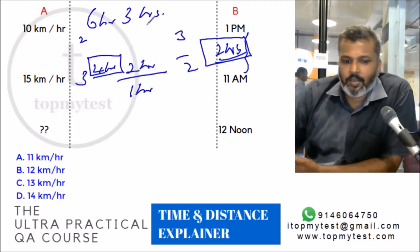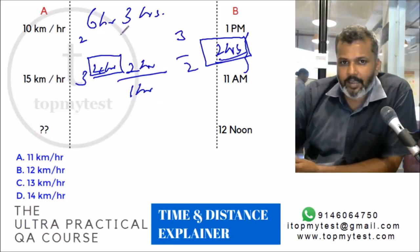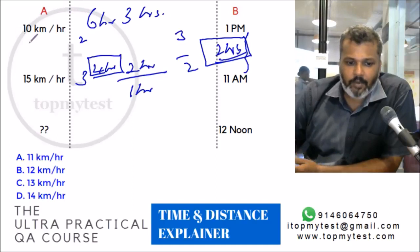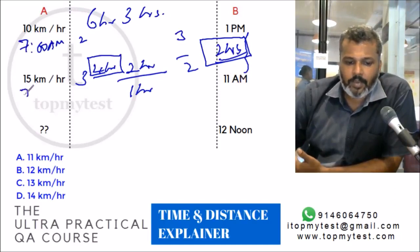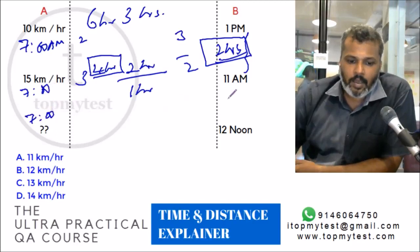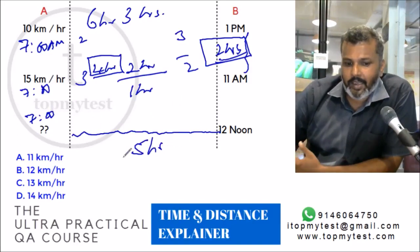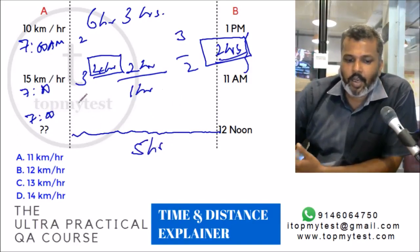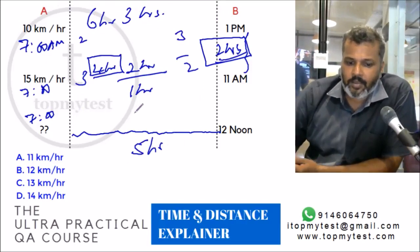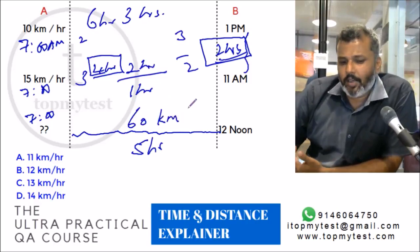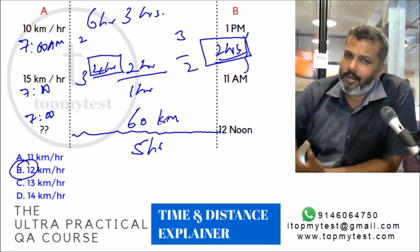Now we know two things: when he started and what the distance is. At 1 PM it's 6 hours since he started, so 6 hours before 1 PM is 7 AM. Confirming: 4 hours before 11 AM is also 7 AM — starting time is 7 AM. To reach at noon he needs 5 hours. Distance is 6 × 10 = 60 km (or 4 × 15 = 60 km). So 60 km in 5 hours is 12 km/h. Pretty straightforward.